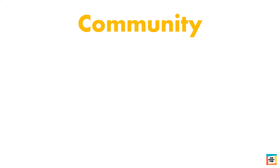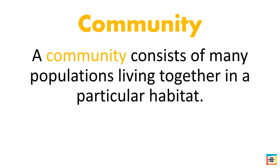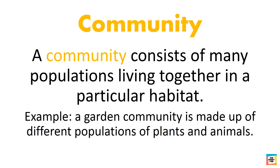Different populations can live in a habitat. A community consists of many populations living together in a particular habitat. For example, a garden community is made up of different populations of plants, animals and other organisms.